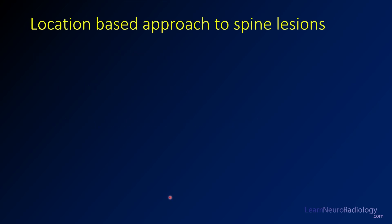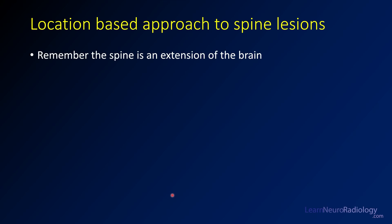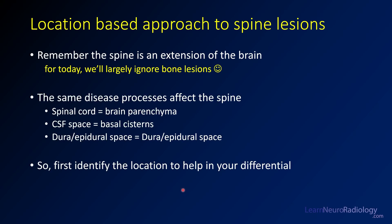The location-based approach relies on the fact that the spine is an extension of the CNS — an extension of the brain in many ways. We're going to ignore bone lesions for the most part in this lecture. In general, the same diseases that affect the brain also affect the spine. The spinal cord is essentially an extension of brain parenchyma, the CSF space in the spine is similar to the basal cisterns, and the dural and epidural spaces are essentially continuous. So if you can identify the location, that's really going to help in forming your differential.